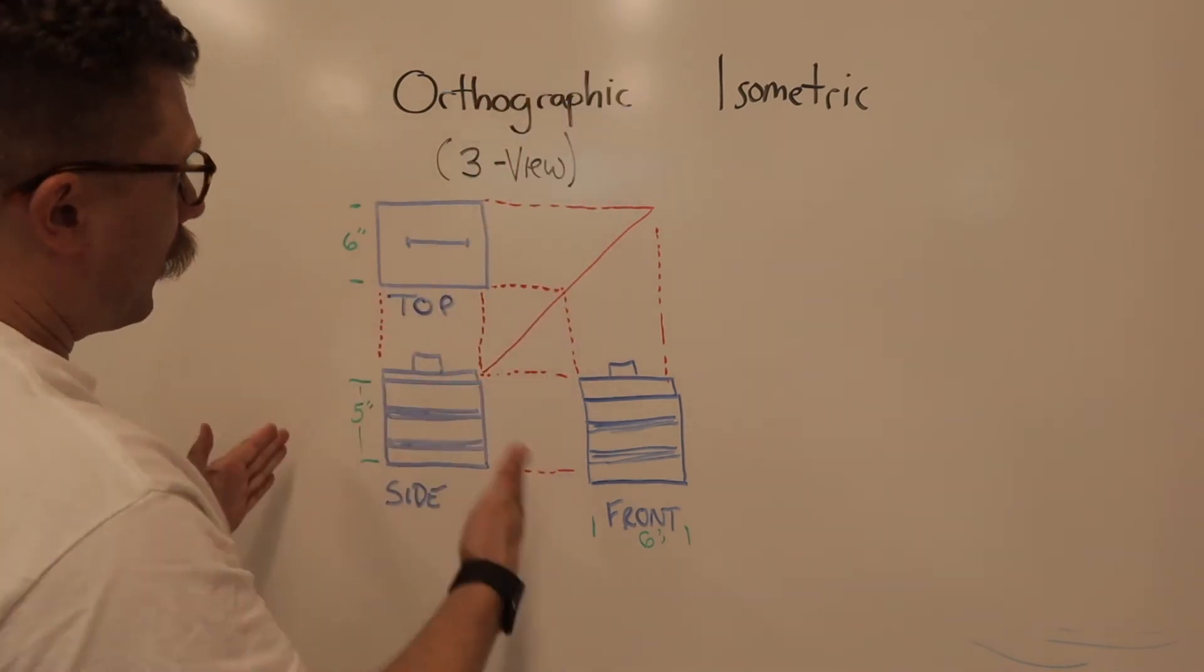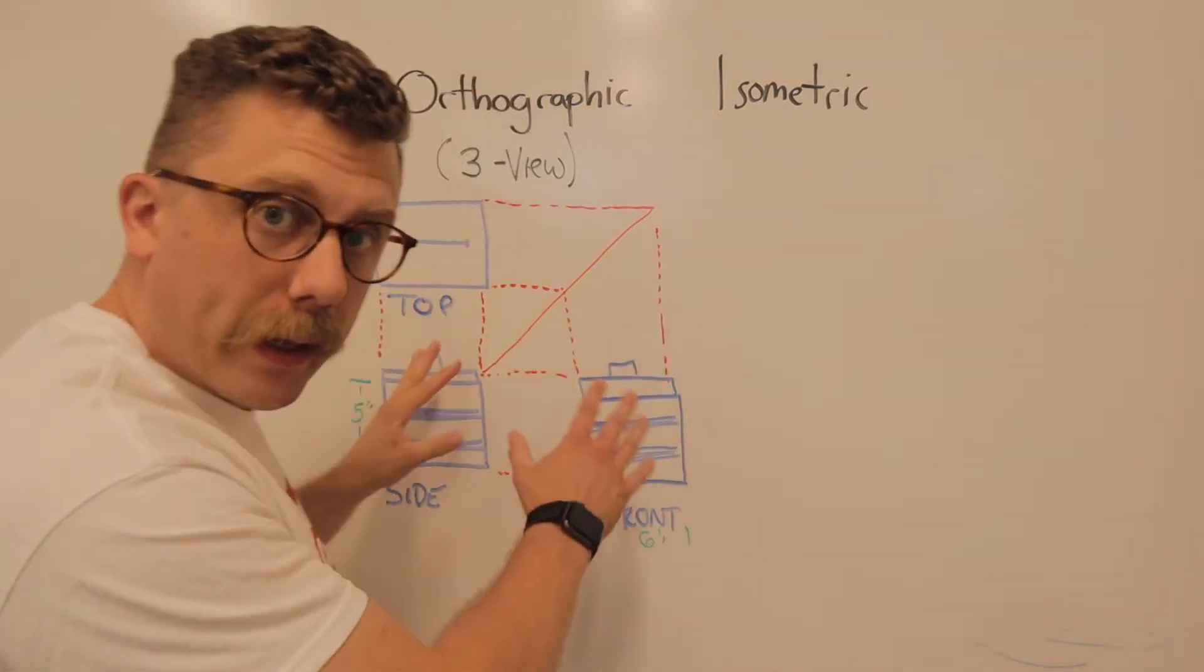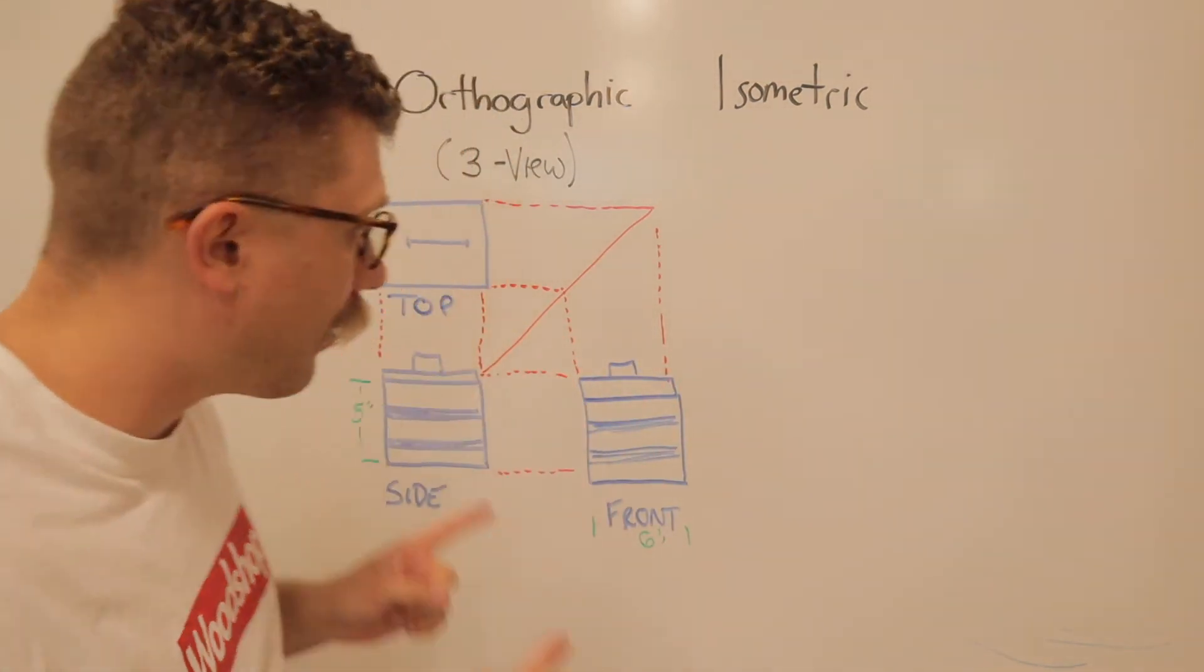So, that's an orthographic drawing, top, side, and front. We normally use a ruler. It's to scale. It looks correct and proper, but just so you know what they are, that's what it looks like.